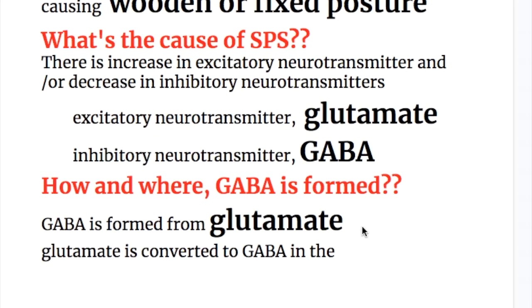What is the cause of stiff person syndrome? There is an increase in excitatory and/or decrease in inhibitory neurotransmitter. The excitatory neurotransmitter is glutamate and the inhibitory neurotransmitter is GABA. GABA deficiency is more prominent in stiff person syndrome.